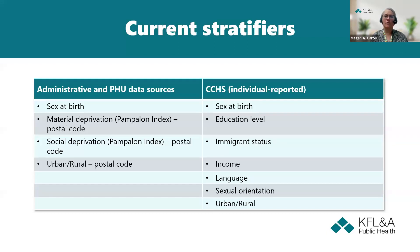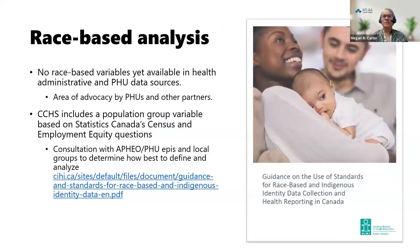These are the equity stratifiers currently in SHED. For hospital, vital stats, and public health unit data sources, we relied on linking postal codes to the PAMPLONA deprivation index from the Institut National de Santé Publique du Québec, and linking them to statistical area classification codes to determine urban-rural status. The CCHS has many equity-related variables; we focused initially on sex, education level, immigrant status, income level, language, sexual orientation, and urban-rural living, but we may explore others.